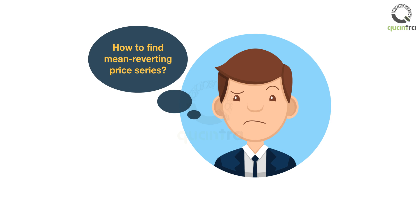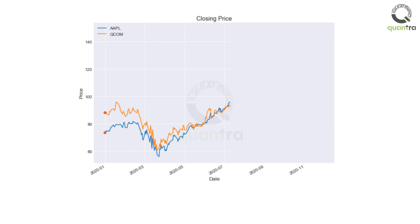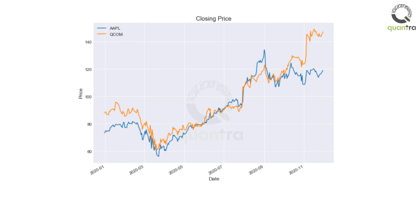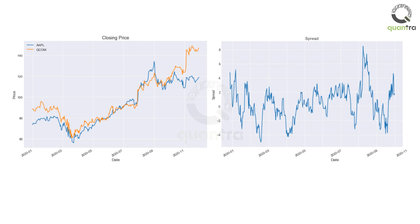No worries. If there are no naturally occurring time series, then you can fabricate one. Suppose the stock Apple is trading at $76 and stock Qualcomm is trading at $86. When Apple moves by $10, Qualcomm also moves by approximately $10. This trend has been observed over a long period, meaning the difference between Apple and Qualcomm prices hovers around the same mean of zero.